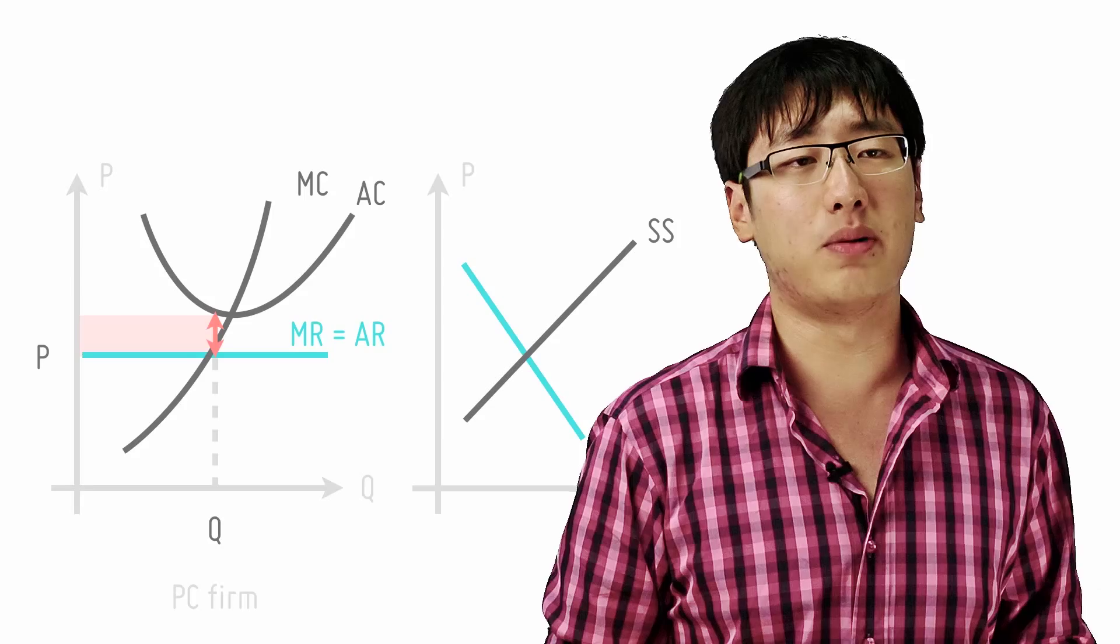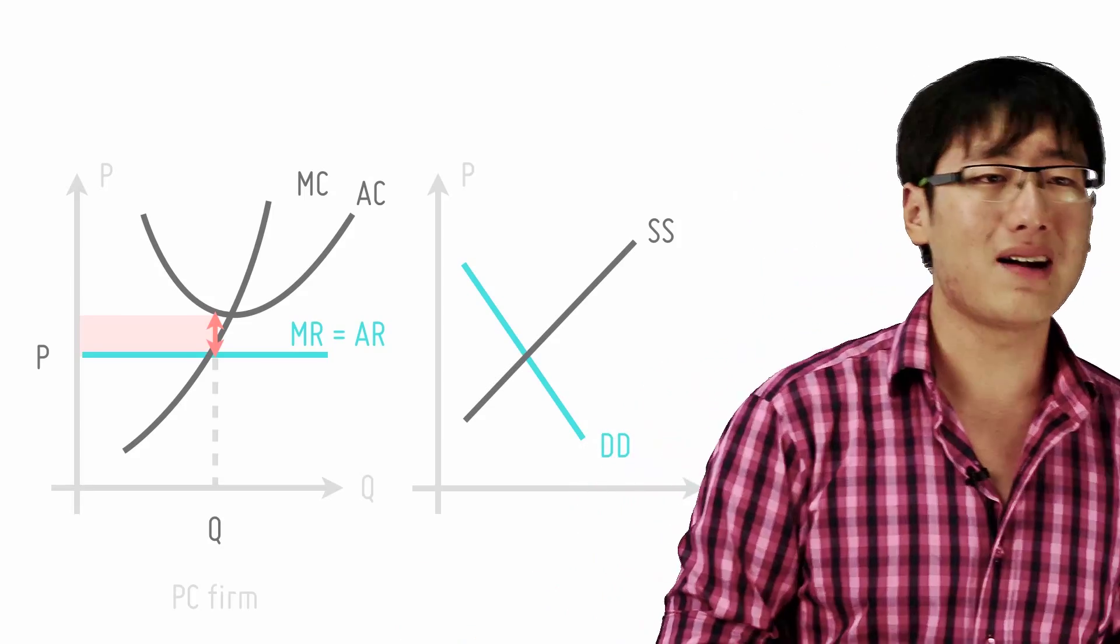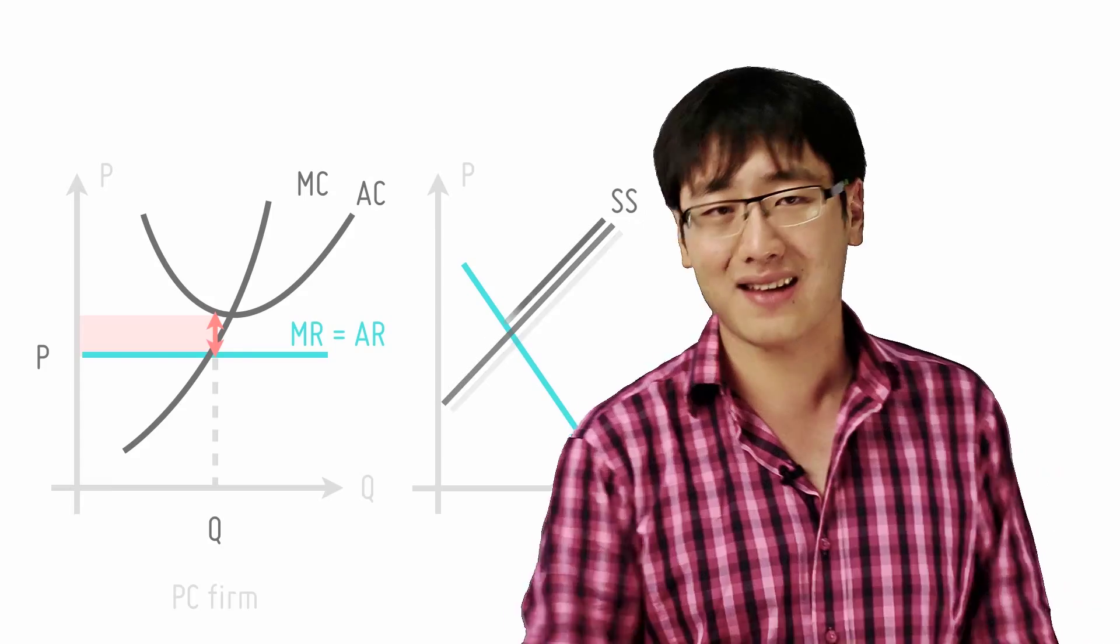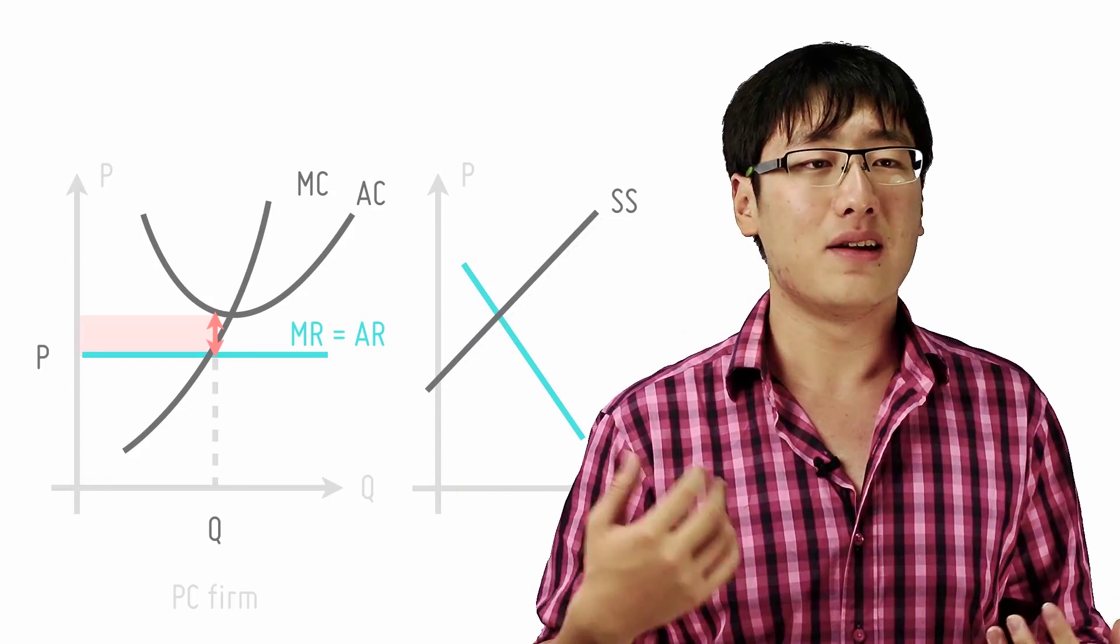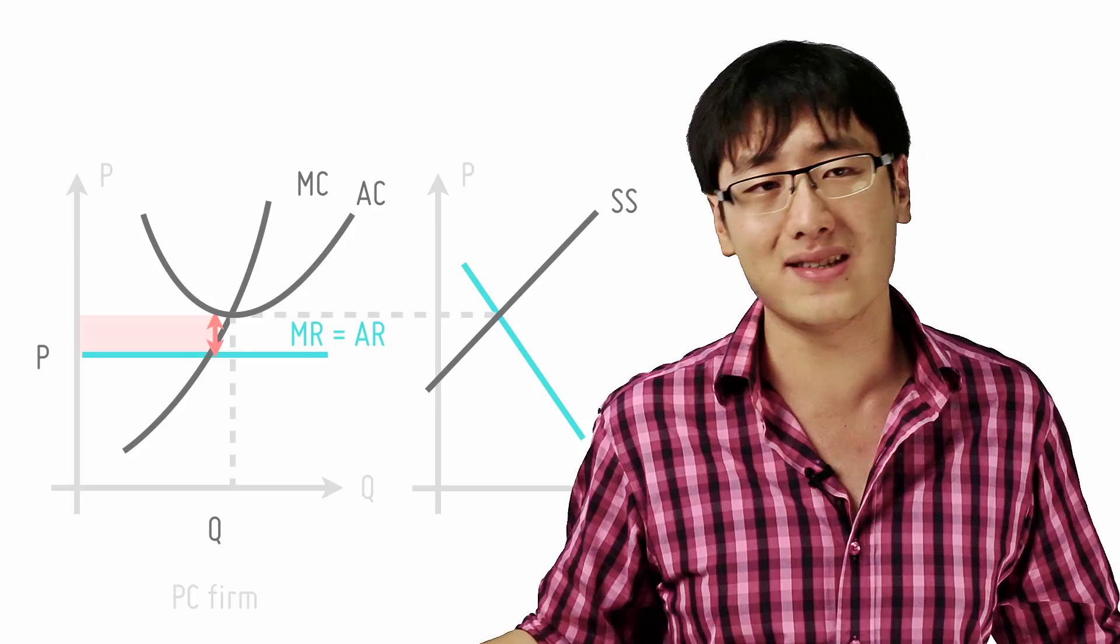What about subnormal profits? Well, almost the same thing. When there are subnormal profits, firms which are losing money exit the market. And since there are no impediments to entry and exit in the long run, it's done very easily.